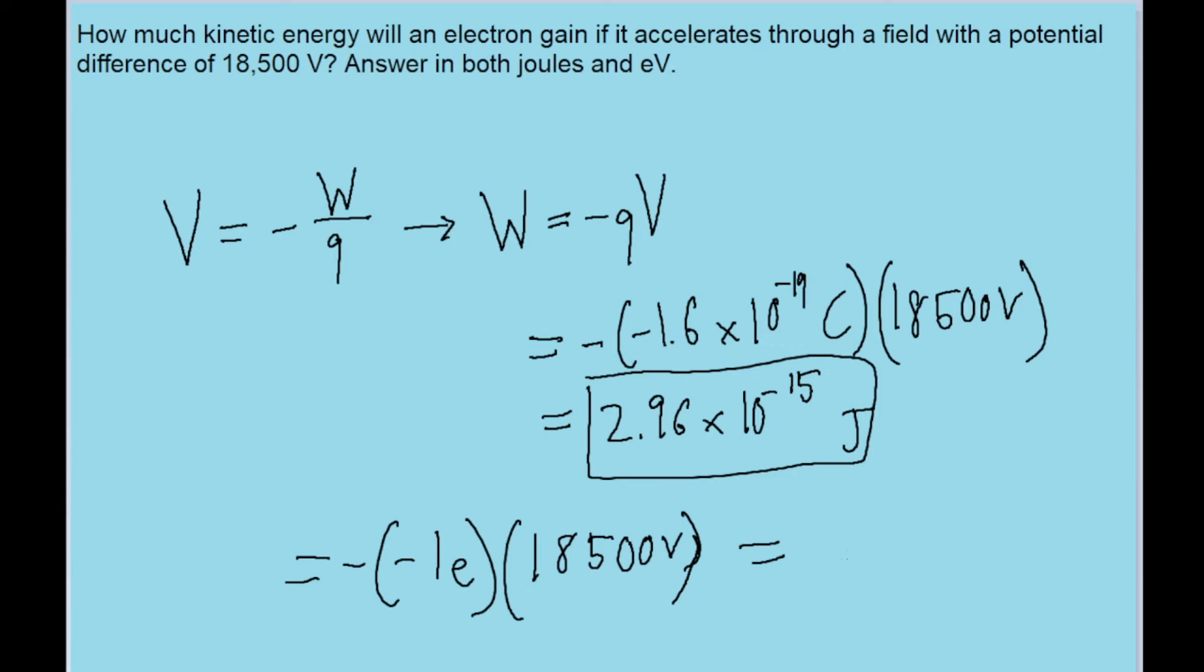Make that a little bit neater. And it's just multiplying it by 1. So it's the same number, it's still 18,500. Except now it's units of electron volts, and it's the amount of work. And so that is the answer to the other part of the problem.